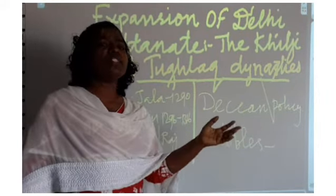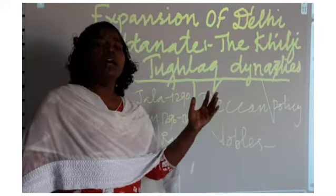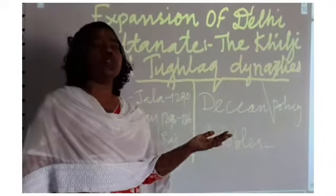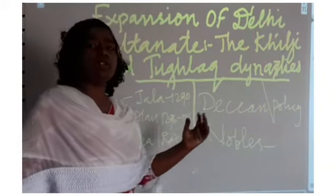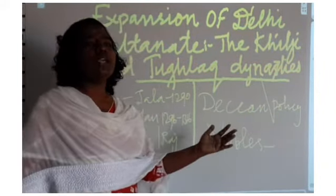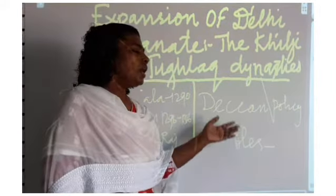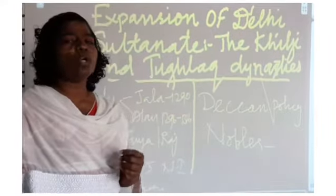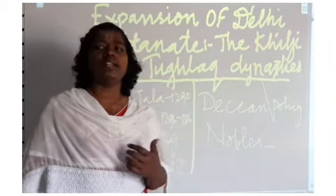The information obtained from the spies was reflected through punishments. There were severe punishments given by Alauddin Khalji to people who disobeyed his rules. The next thing is revenue reformation.